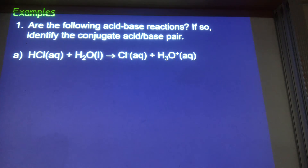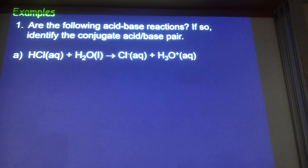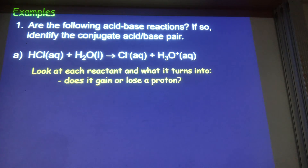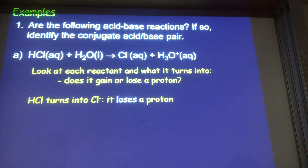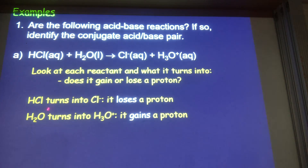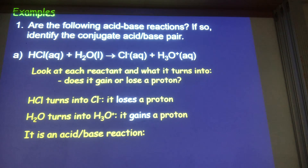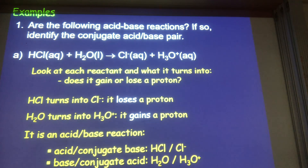So how do we use this in problems? For acid-base reactions we'll have conjugate acid-base pairs — two substances differing by a proton. HCl turns into Cl⁻: they differ by a single H⁺. H₂O turns into H₃O⁺: they differ by a single H⁺. So HCl loses a proton — the acid turns into its conjugate base. H₂O accepts a proton and turns into H₃O⁺ — the base turns into its conjugate acid. We've got two conjugate acid-base pairs, so this is most definitely an acid-base reaction.